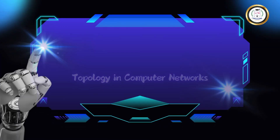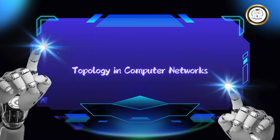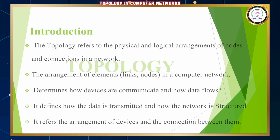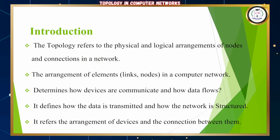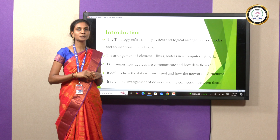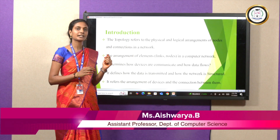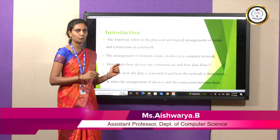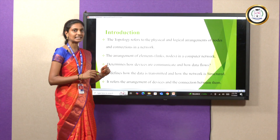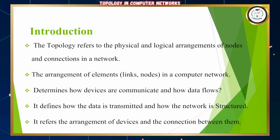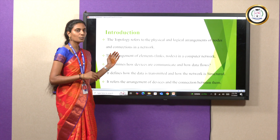In this session, we are going to see about topology in computer networks. What is topology? A topology is nothing but it is a structure of a network. It defines how the data is transmitted and how the network is structured. It refers to the physical and logical arrangements of nodes and connections in the network, and the arrangements of devices and the communications between them.